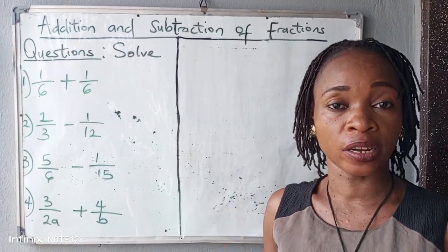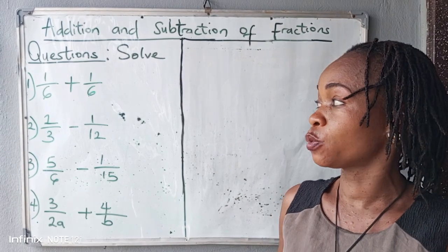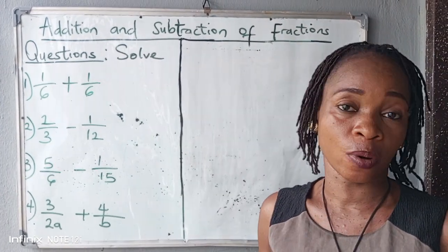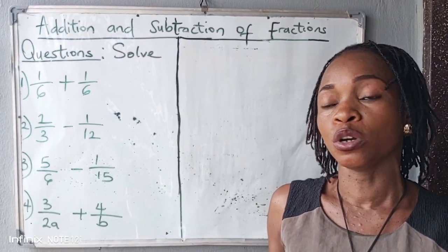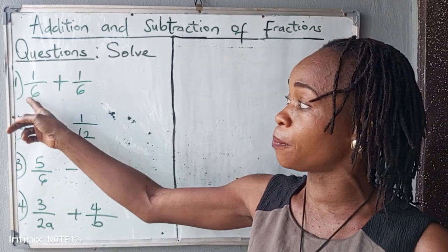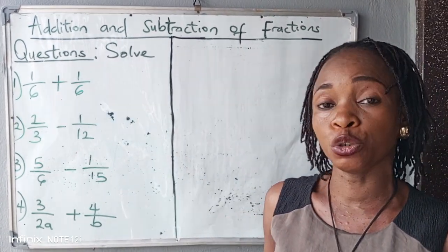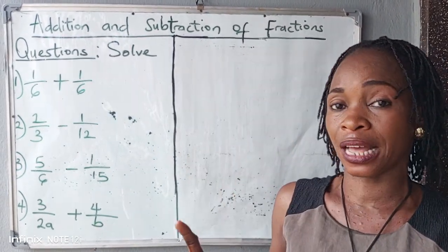Here we have four different approaches. The first approach is when we have the same number as our denominators. What do we do? When we have the same number as our denominators, what you do is pick one of the numbers as your LCM, add the numerators or subtract the numerators depending on the question.